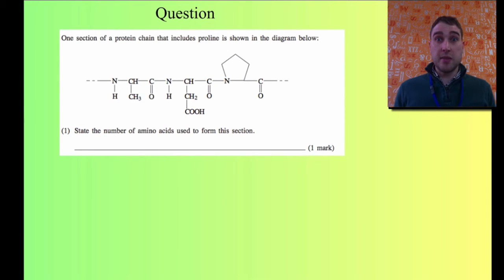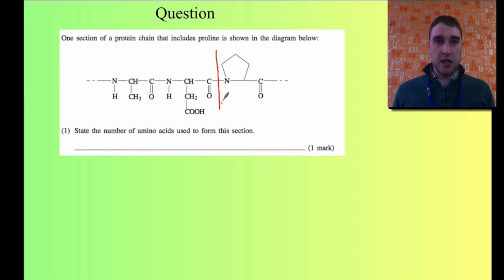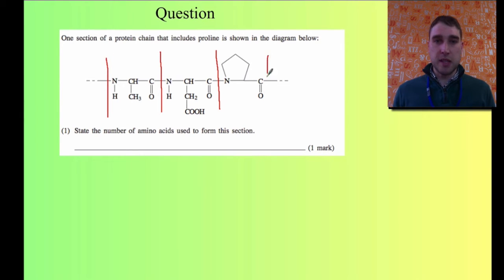Here's a question similar to what you might get on amino acids. We have a section of a protein chain. It says: state the number of amino acids used to form that section. What I'm going to do is draw a line where each amine group is. We've got a line between this nitrogen and carbon, another line here, and another line here. So we have a total of three amino acids that have been used to form that section of the protein.